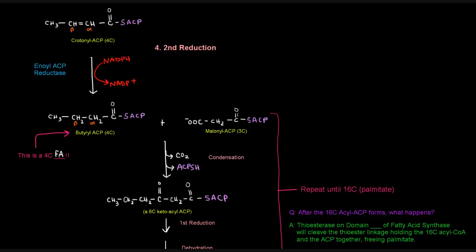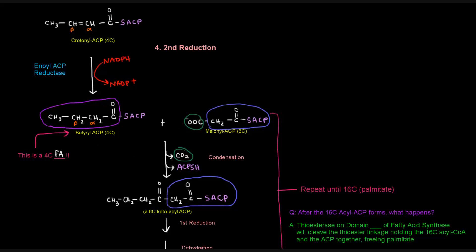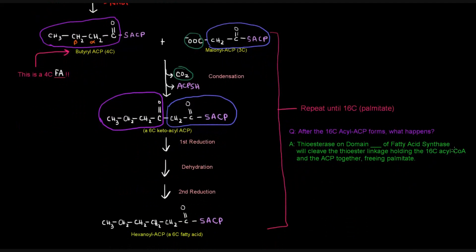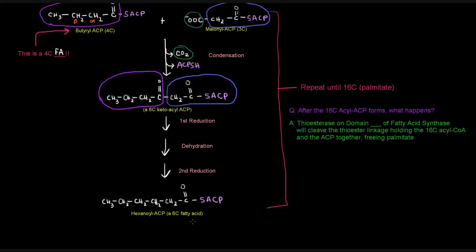Now this acyl group is going to be condensed with the next malonyl-ACP. Again, the carboxyl group leaves as CO2, and they are joined together by acyl-malonyl-ACP condensing enzyme. The two-carbon malonyl portion combines with the four-carbon butyryl group, giving us a six-carbon ketoacyl-ACP. Then the four reactions — condensation, first reduction, dehydration, and second reduction — repeat, and after this second round we have a six-carbon fatty acid attached to the ACP.